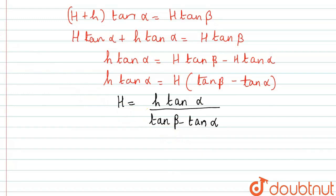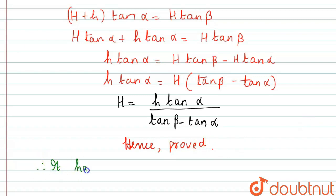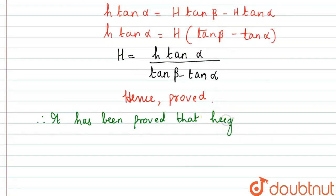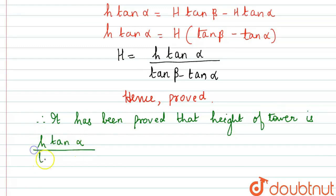Hence, it has been proved that the height of the tower is h·tan α divided by (tan β − tan α).